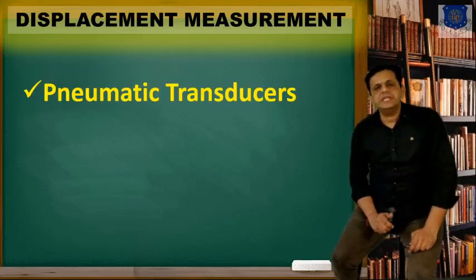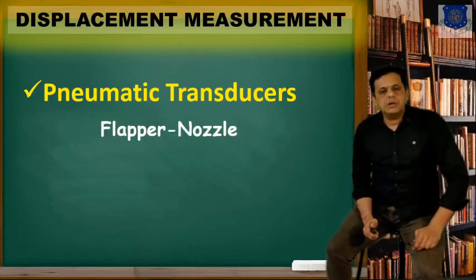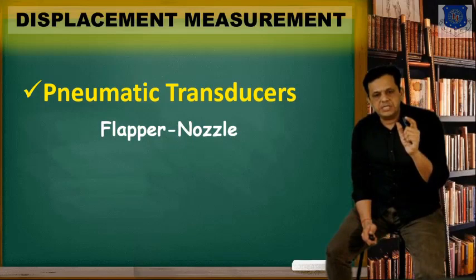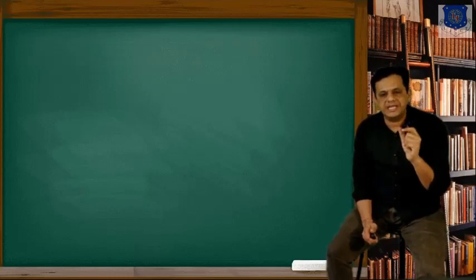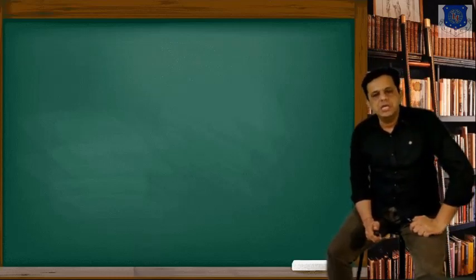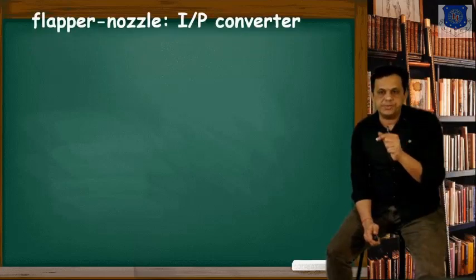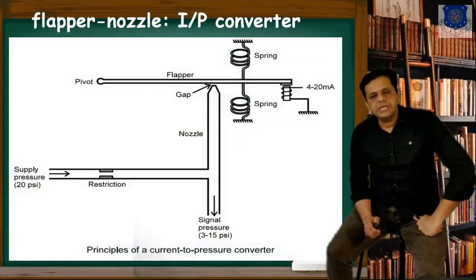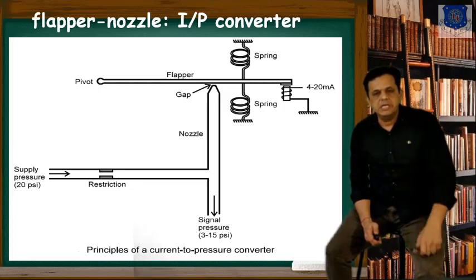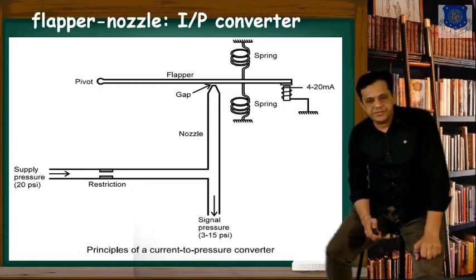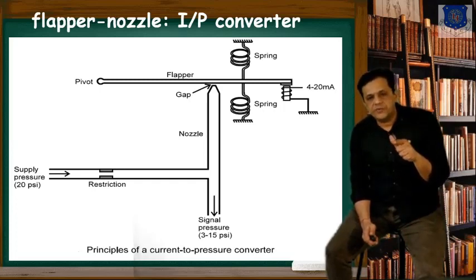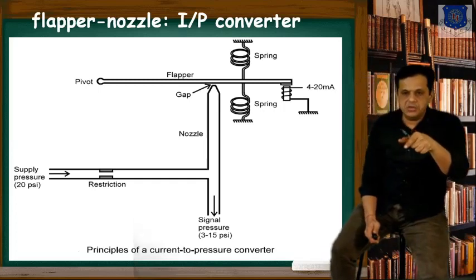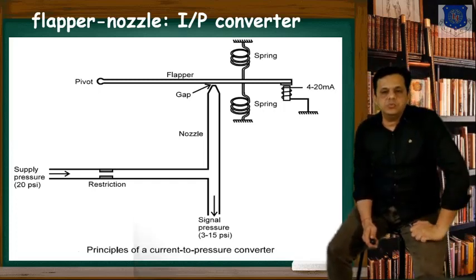Pneumatic transducers work by transferring pressure in terms of displacement. Let us revise the concept of the flapper-nozzle, where we convert current to pressure. In the diagram, supply pressure is given at 20 PSI standard. It passes through a restriction — the orifice — and then splits two ways: one going to the nozzle, and the other going to the signal pressure, readable as 3 to 15 PSI standard.